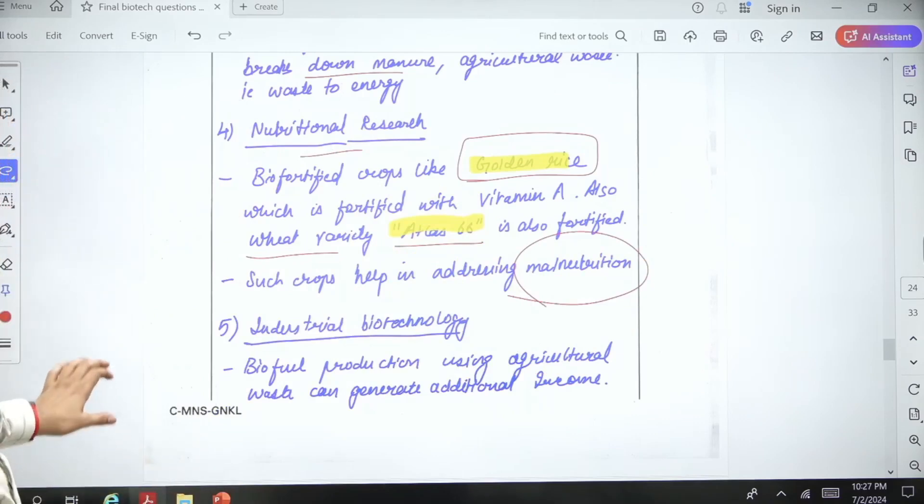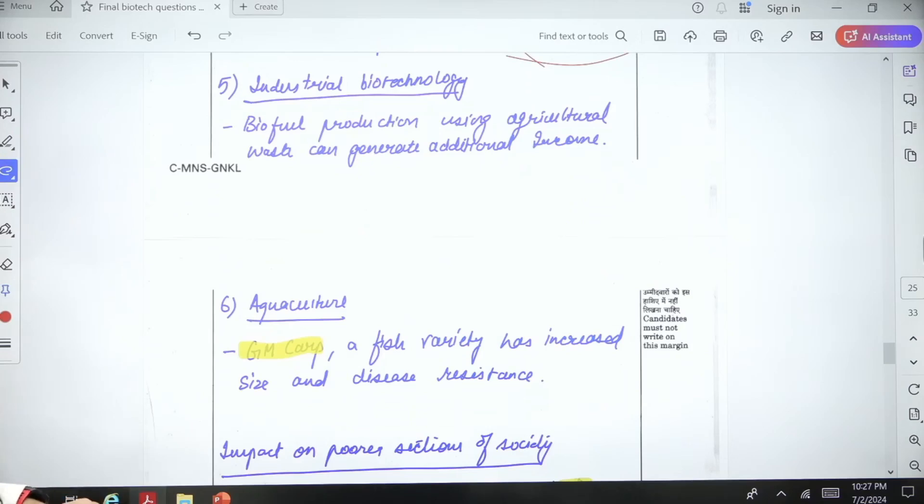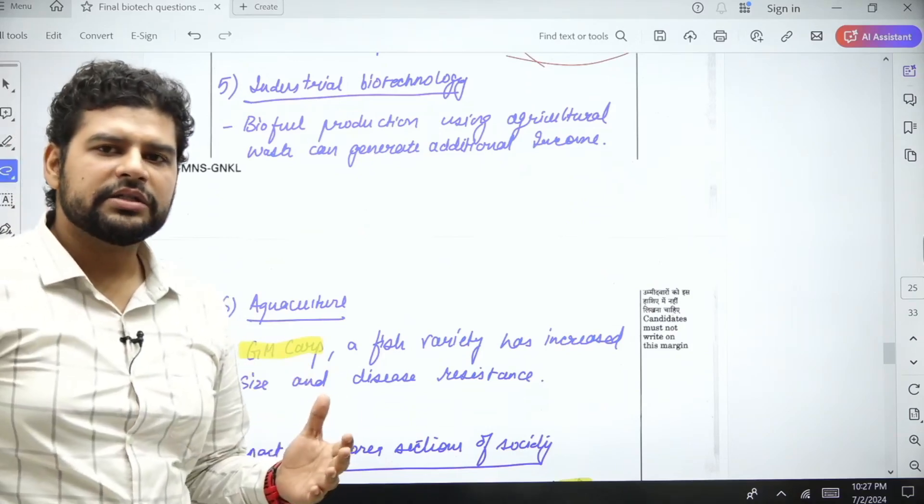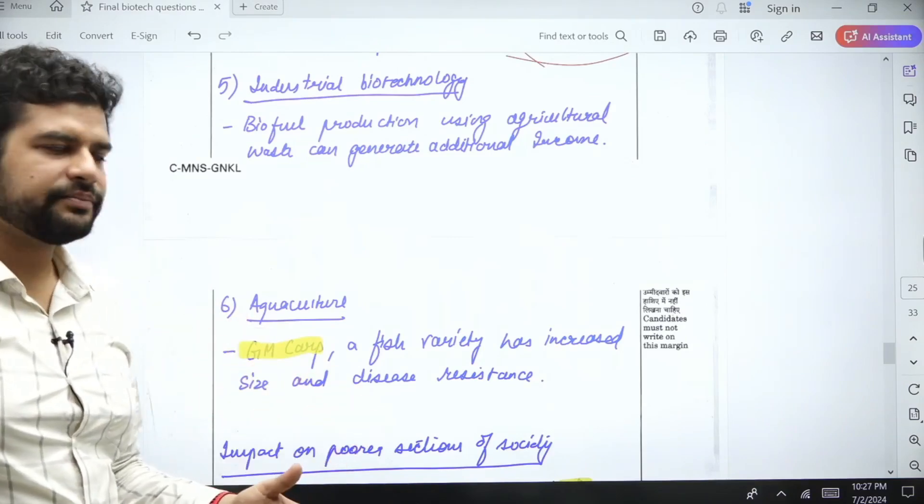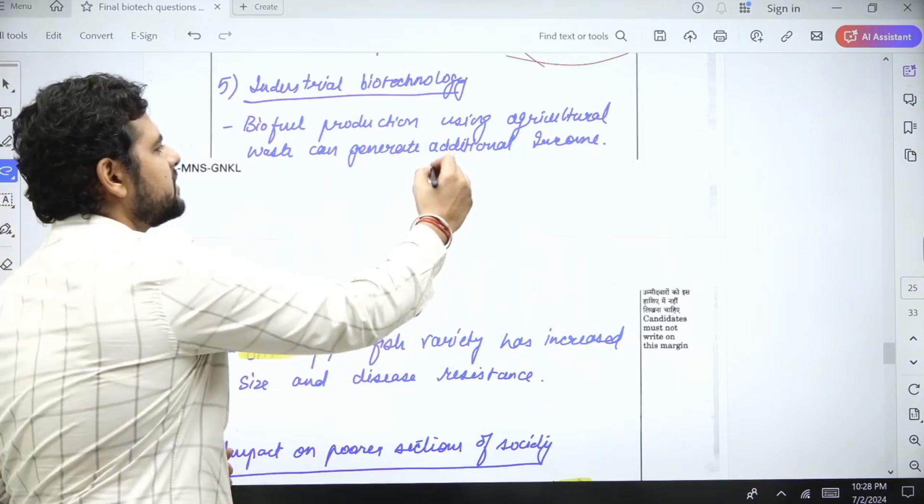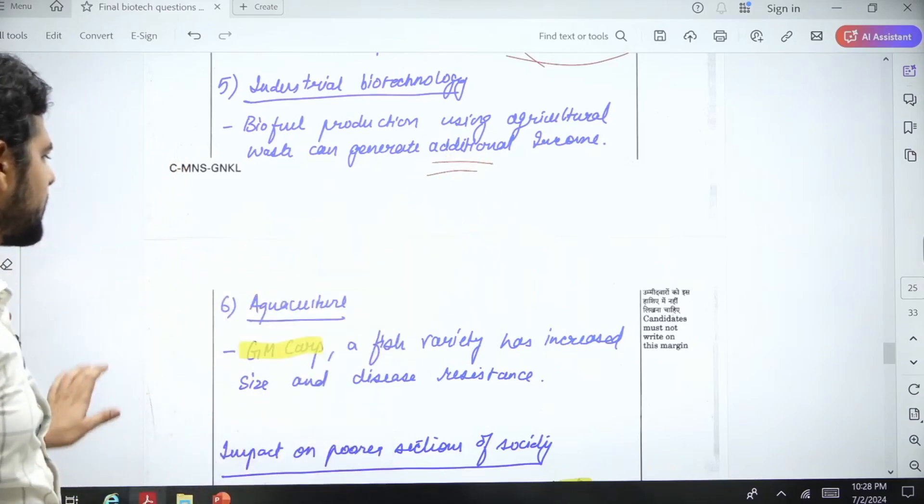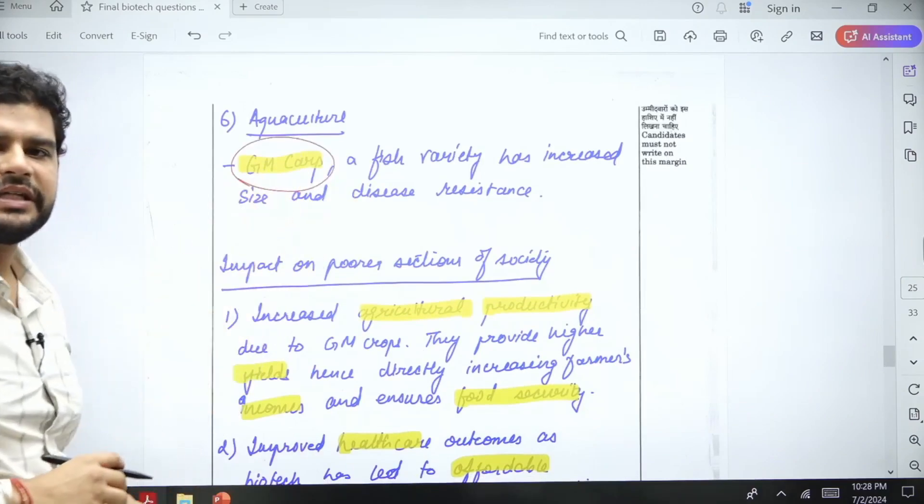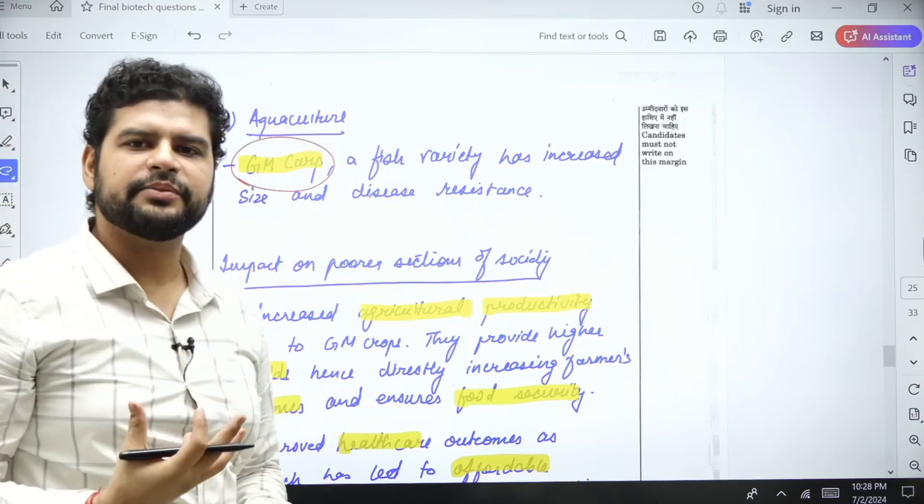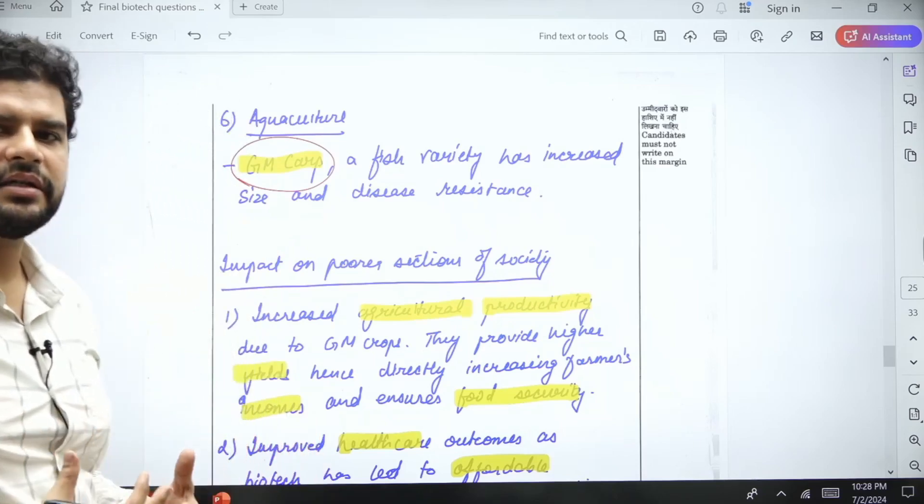Industrial biotechnology: biotechnology can be used to use agriculture waste and generate additional income. Aquaculture: because of biotechnology, GM carp, a fish, has been developed which is bigger in size and has disease resistance.